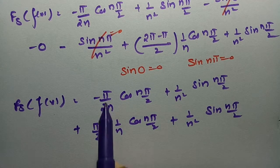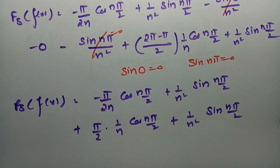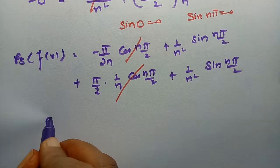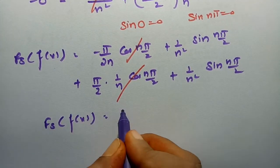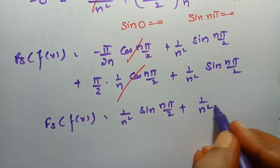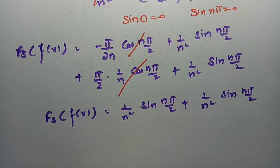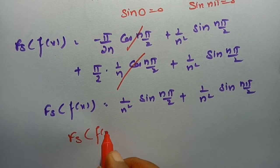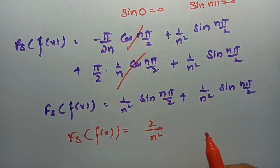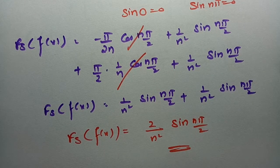Observing the result: −π/(2n) and +π/(2n) multiplied by cos(nπ/2) cancel each other. What remains is (1/n²)·sin(nπ/2) + (1/n²)·sin(nπ/2), giving the finite Fourier sine transform of f(x) = 2/n² · sin(nπ/2).